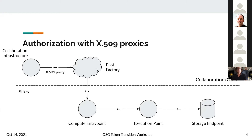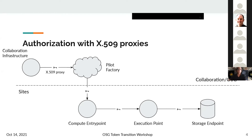The basic idea with X509 proxies is that your collaboration generates their X509 proxy. In many cases for production workflows, this X509 proxy is the key to the castle. It's passed to the pilot factory, which uses it to submit to the CE. The CE authenticates and authorizes based on that proxy, and eventually it makes its way to your execution point. That same proxy is then used to access storage.